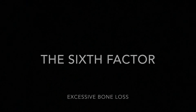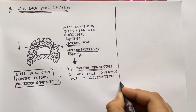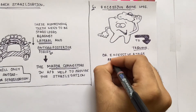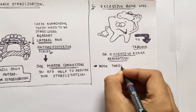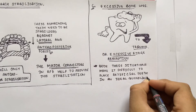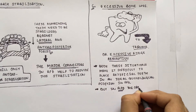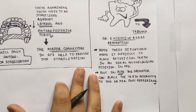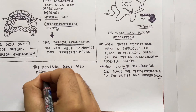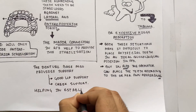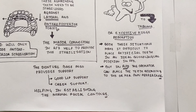The sixth factor is excessive bone loss. When there is trauma or excessive residual ridge resorption, it is difficult to place the artificial teeth of an FPD in an ideal buccolingual position. In a removable partial denture, the artificial tooth can be positioned as per the operator's preference, and the denture base can be fabricated to provide the required support and aesthetics. The denture base also provides good lip and cheek support, re-establishing normal facial contours.